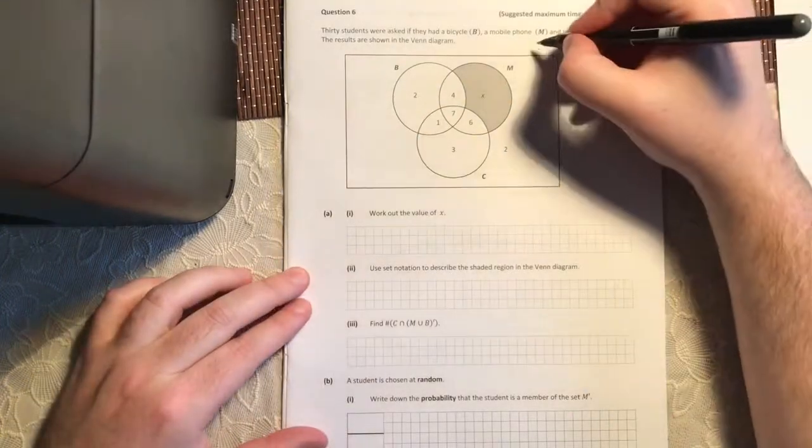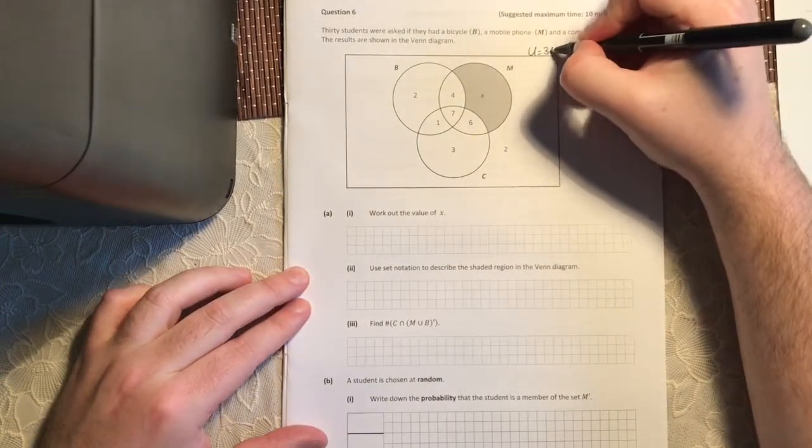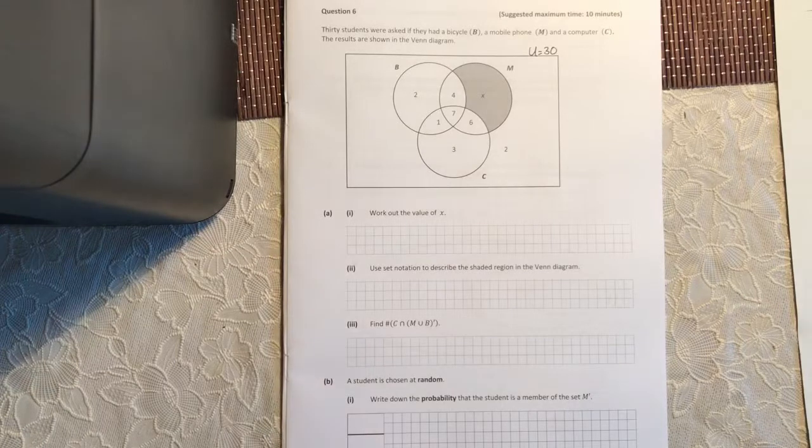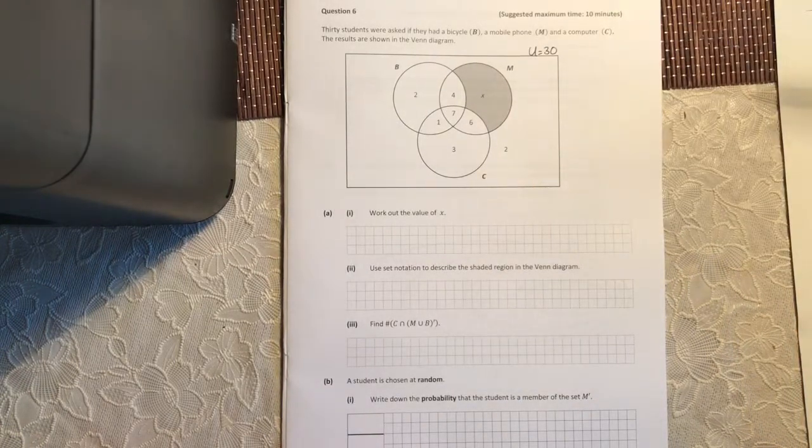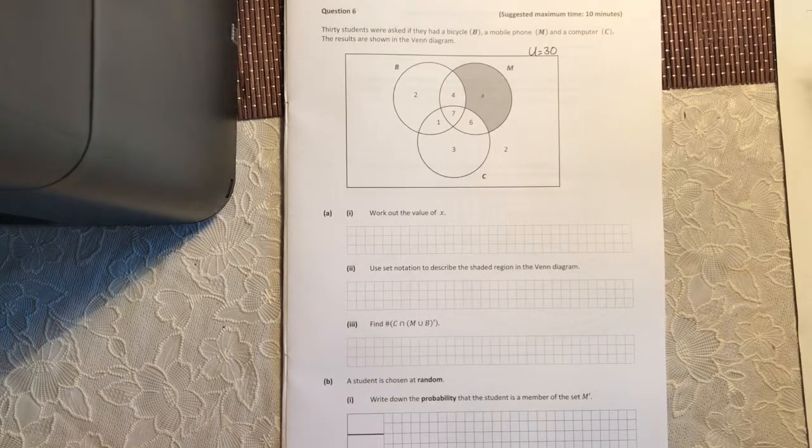30 students were asked if they had a bicycle—you know what, I'm just going to say universe equals 30. If 30 students were asked, that means how many students in total? 30. 30 students were asked if they had a bicycle, a mobile phone, and a computer. The results are shown in the Venn diagram.